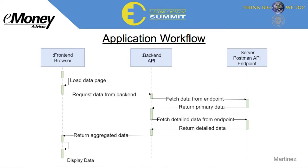After that, we use that information to make another request to a different endpoint, which returns the detailed data. In the backend we aggregate it and send it back to the frontend, and the frontend compiles it into a nice, easy-to-read display.